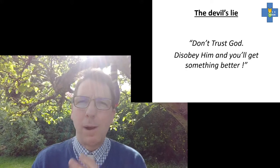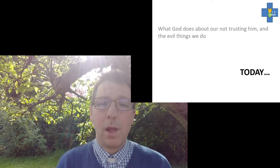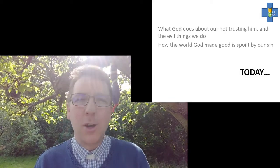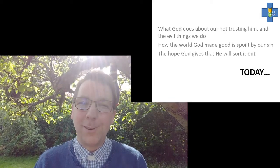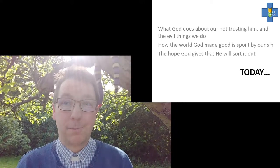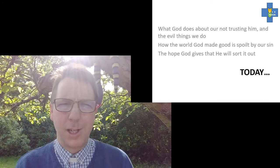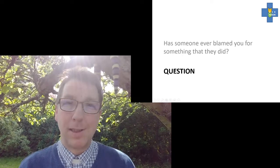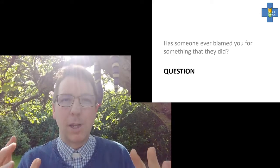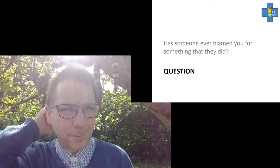So today we're going to think about what God does about our not trusting him and the evil things that we do. We'll hear about how the world God made is spoiled by our sin, that choice of going against God. And we'll also see, wonderfully, the hope that God gives that he will come and sort it out using his special savior. So, going back to that question: Has someone ever blamed you for something they did? As we read what happened next in our story at the beginning of the Bible, our true story, we'll watch out for who blames who in this story.